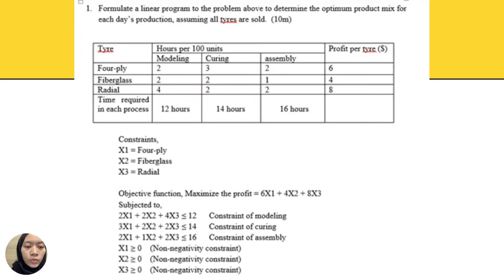We will move to the question for this assignment group 2. The question is to formulate a linear program to the problem above to determine the optimal product mix for each day's production. For the first question, we need to construct a constraint equation: x1 equals 4-ply, x2 equals fiberglass, and x3 equals radial.